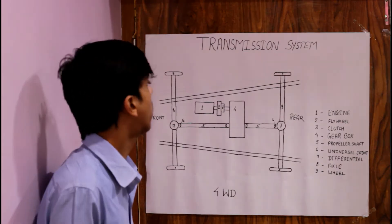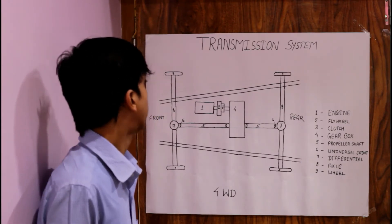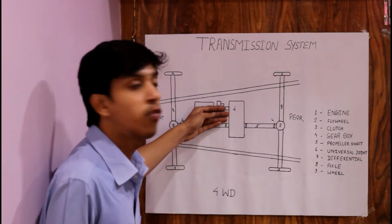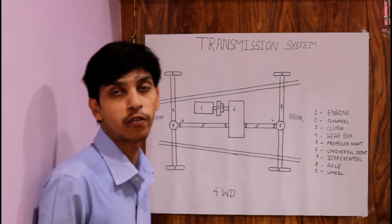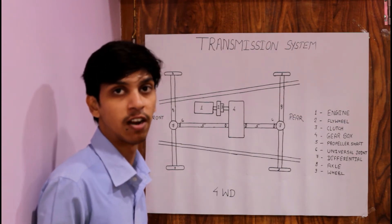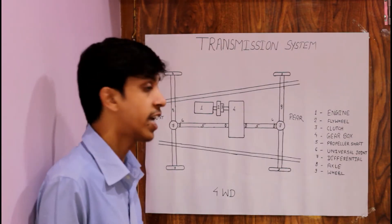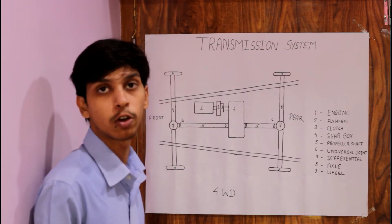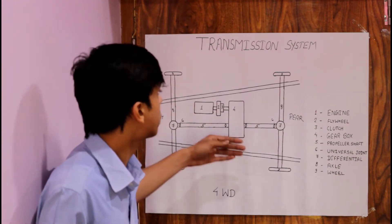Third is the clutch, which is used to engage and disengage the engine shaft. Fourth is the gearbox. In the gearbox, two shafts are present: the main shaft and the lay shaft, on which a number of gears are present. As per the requirement, the gearbox can be sliding mesh, constant mesh, or synchromesh — we will discuss those further.